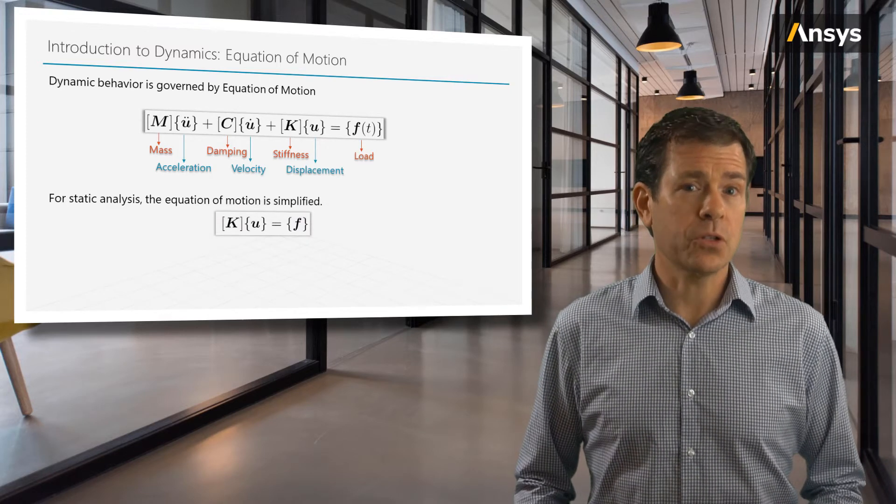Now the stiffness matrix term can be physically envisioned as a spring. A soft body when pushed upon will deform more than a stiff body, assuming we push with the same applied force. But now getting back to dynamics, let's have a look at inertia.